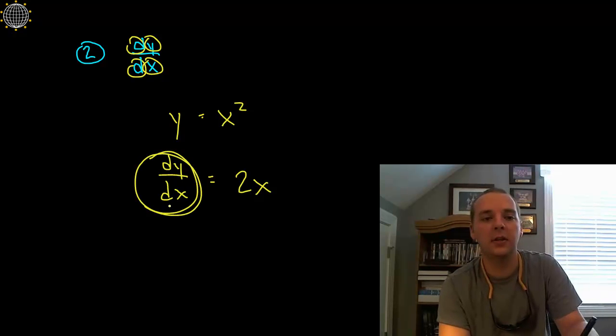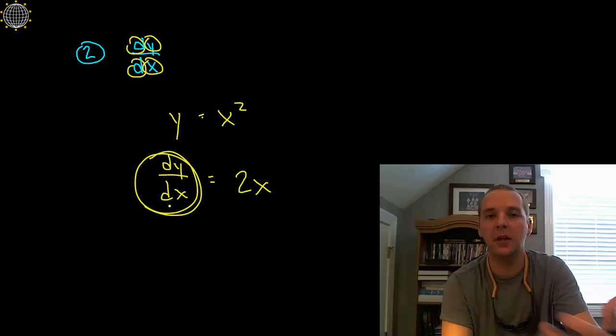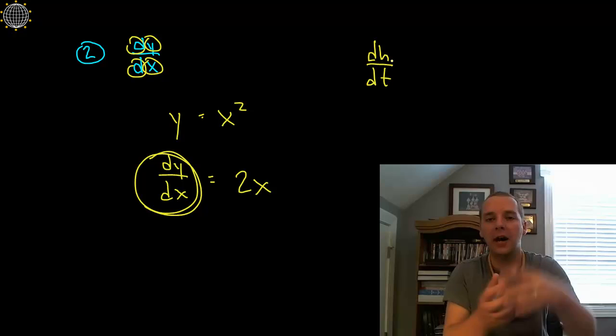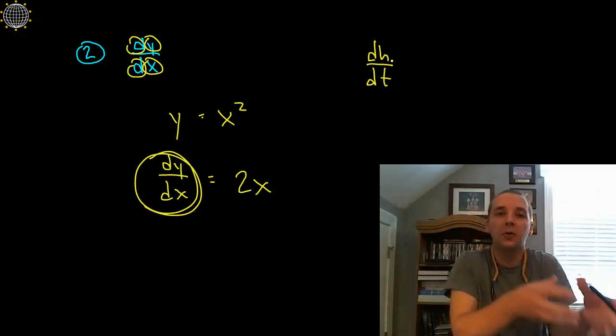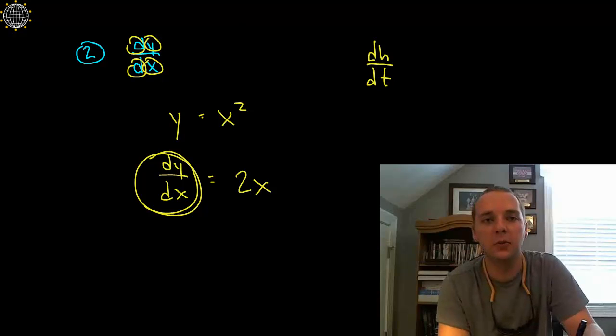This notation is extremely helpful when we get into some applications and some like related rates problems and optimization problems later in the course. Because we might be finding the change in height over time of a falling object or something like that. So that might be expressed as dh dt, that's the change in height over time, or the derivative of the height function with respect to t, which is time.